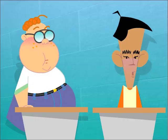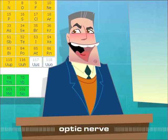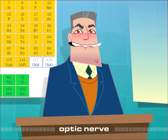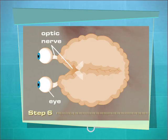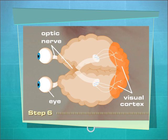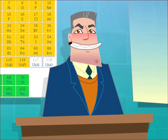The optic nerve transmits visual information from the retina to the brain. The area in the brain where the visual information ends up is known as the visual cortex. The visual cortex compiles all the information sent from the eye through the optic nerve, and this is how the brain lets us see the world.